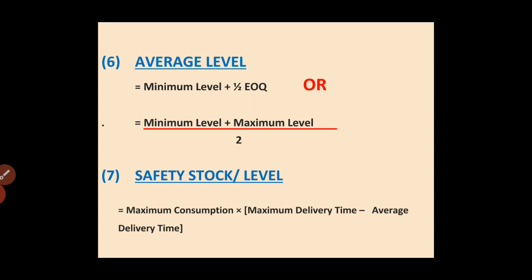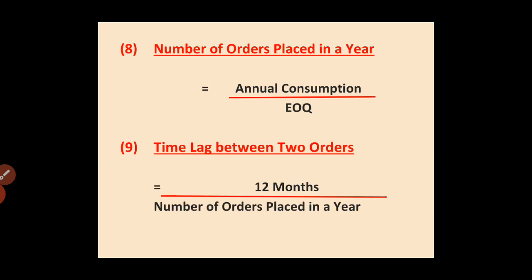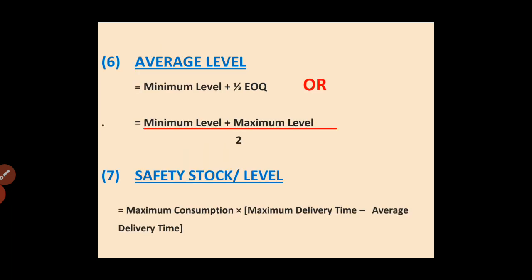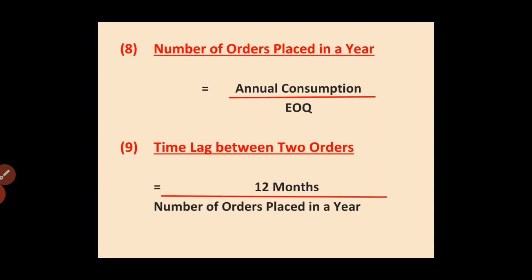Formula number seven: Safety Stock or Safety Level. The formula is maximum consumption multiplied by (maximum delivery time minus average delivery time). You take the difference of maximum time and average time and multiply it with maximum consumption. Up to this, these are the main formulas.